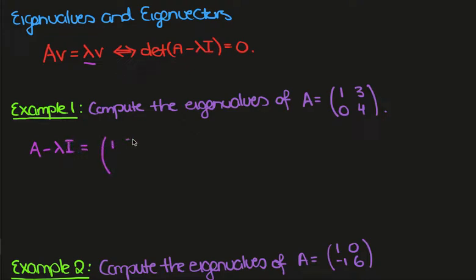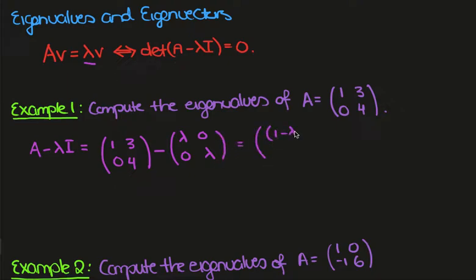That's the matrix [1, 3; 0, 4] minus [lambda, 0; 0, lambda]. So what we have here is 1 minus lambda in the first entry, 3, 0, and 4 minus lambda.